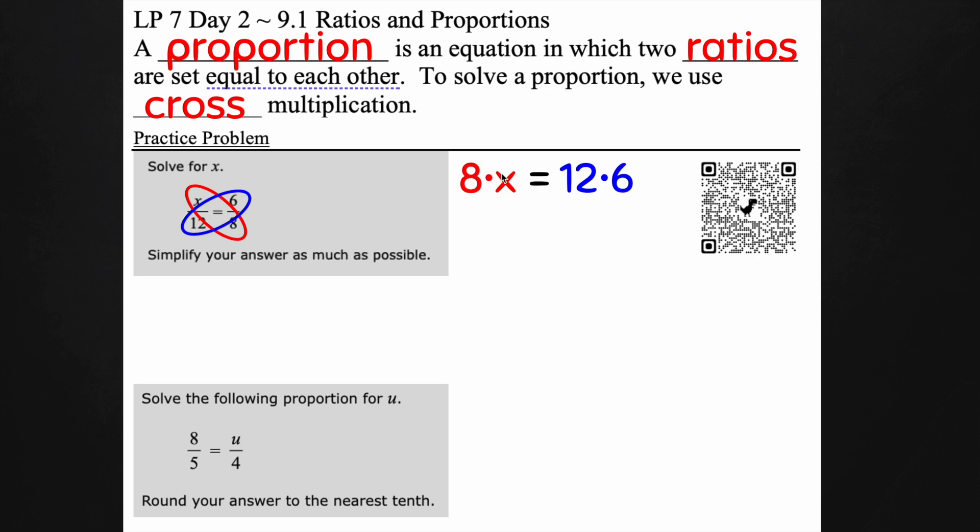Now I have 8 times x and 12 times 6 so I get 72. The last thing I want to do to find my x is divide by 8 on both sides because I don't want to know what 8x is, I want to know what just x is.